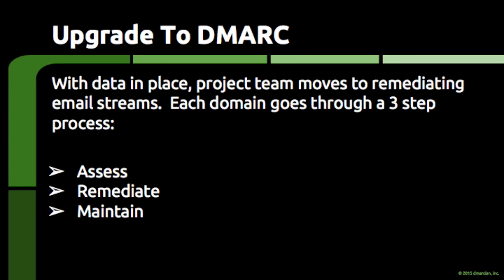After putting DMARC records in place to collect data on all domains, the project team shifts to getting email streams into compliance with DMARC. The process is a tight three-step loop: assess, remediate, and maintain. Each domain is put through the three steps so that all legitimate sources of email are identified, brought into compliance, and then monitored for ongoing DMARC compliance.